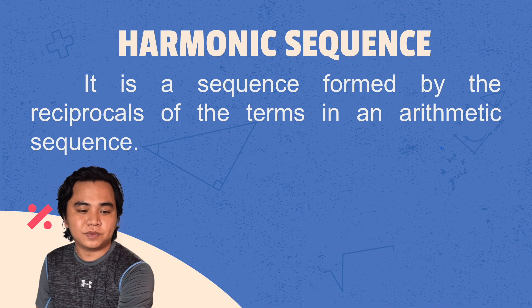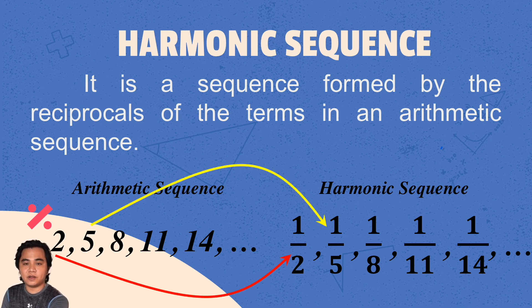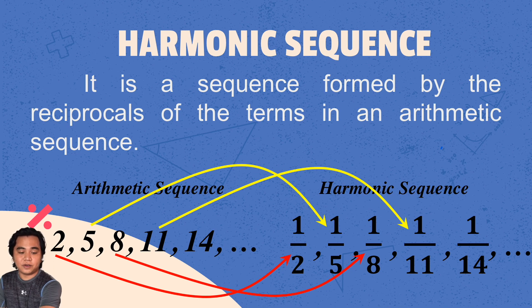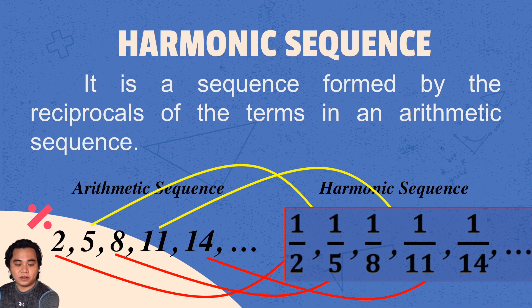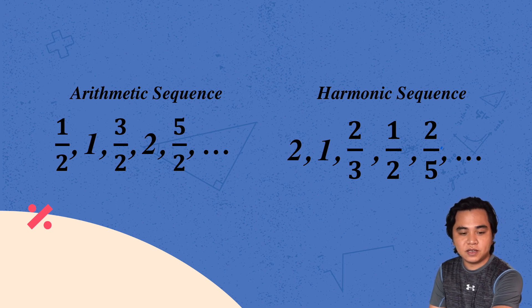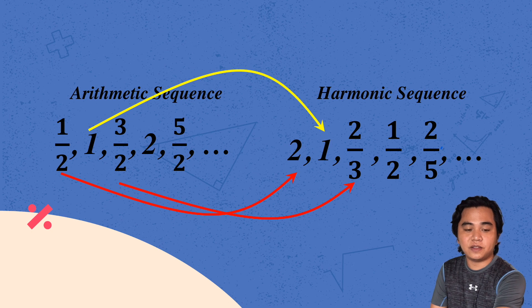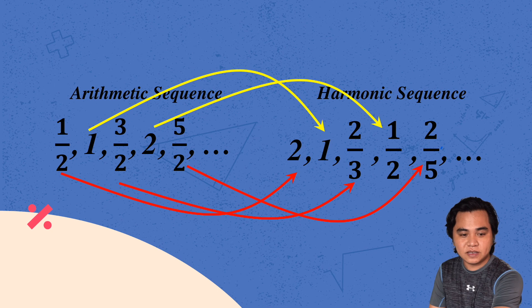For example, the given arithmetic sequence is 2, 5, 8, 11, 14. The reciprocal of 2 is 1/2, the reciprocal of 5 is 1/5, the reciprocal of 8 is 1/8, the reciprocal of 11 is 1/11, and the reciprocal of 14 is 1/14. For another example, the given arithmetic sequence is 1/2, 1, 3/2, 2, 5/2. The reciprocal of 1/2 is 2, the reciprocal of 1 is still 1, the reciprocal of 3/2 is 2/3, the reciprocal of 2 is 1/2, and the reciprocal of 5/2 is 2/5.